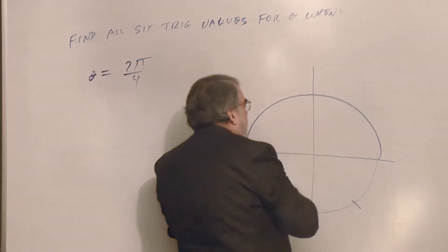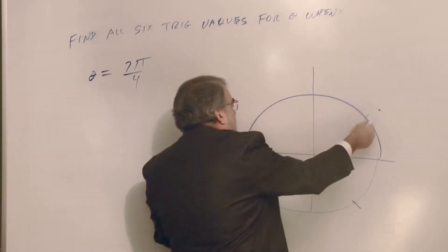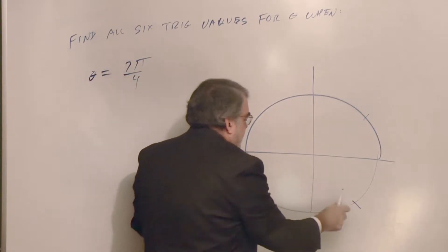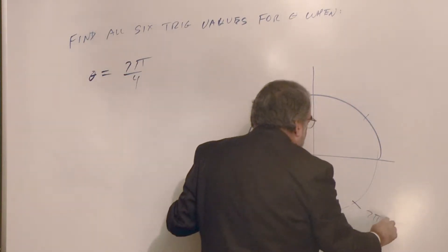So here is one half circle and the other three quarter half circle is here. Or you can say that here's a quarter circle. So I have one, two, three, four, five, six, seven. Right there. Here's 7π over 4.